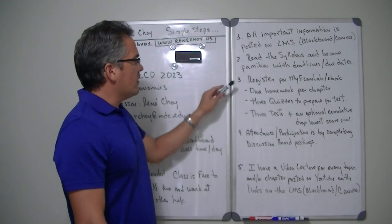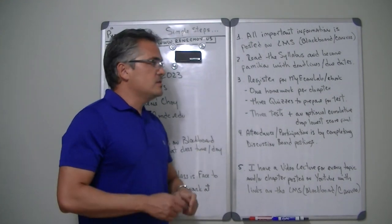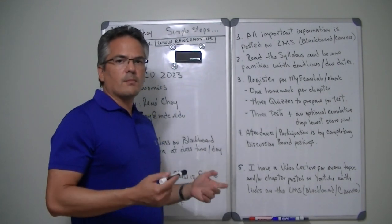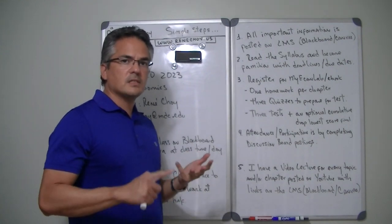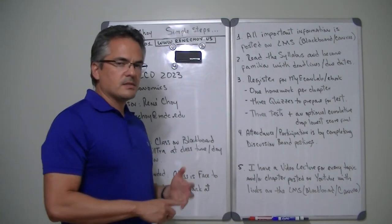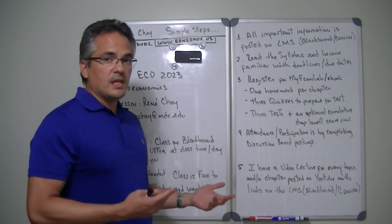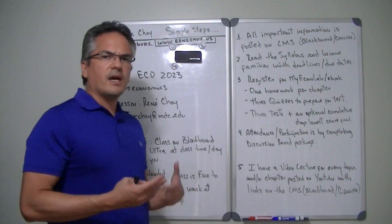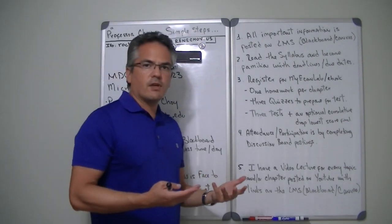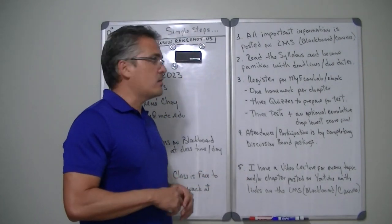Once you've read the syllabus, one of the things that it's going to ask you to do is register for a program called MyEconLab, which I use for my intro to macroeconomics and my intro to microeconomics. MyEconLab comes with an e-book attached. So if you're happy with the e-book, you don't really have to buy a physical book in order to carry it around because we're not going to be walking around with it.